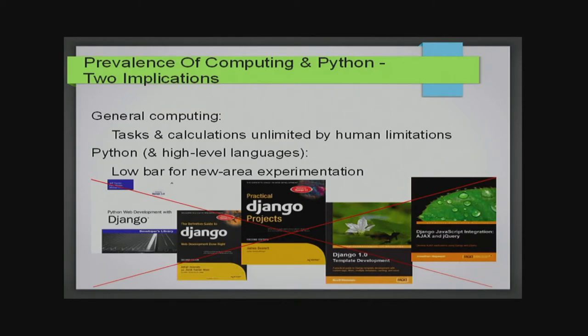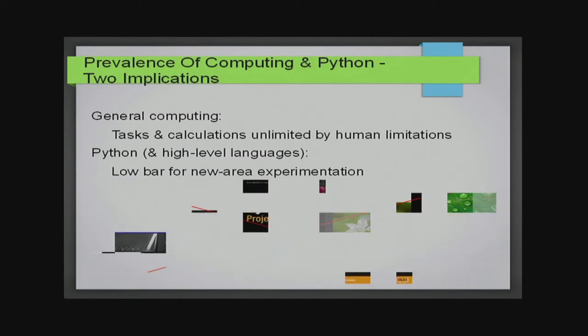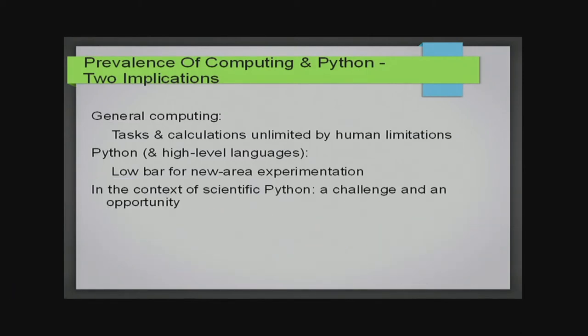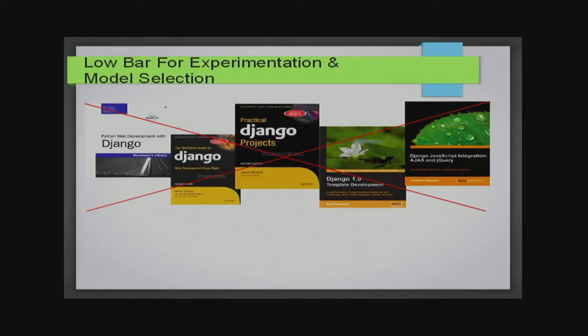For example, suppose we'd like to try out our hand at web development, then we don't need to read every possible book written on Django before we just start out playing with it. You just need a tutorial and some examples. So, if we look at these two trends in the context of scientific Python, then they pose both a challenge, but they provide opportunities as well.